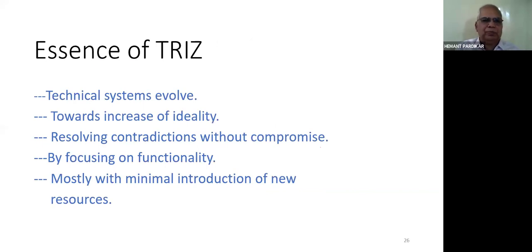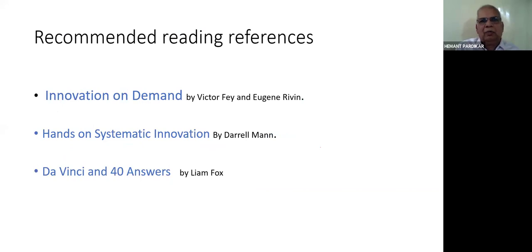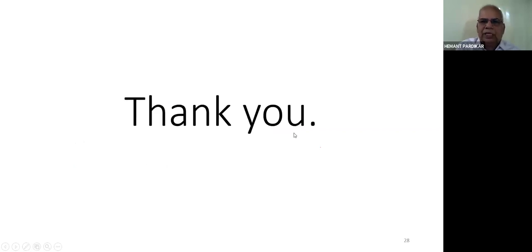This is my last slide. Technical systems essence of TRIZ: technical systems evolve towards increase of ideality, resolving contradictions without compromise by focusing on functionality, mostly with use of minimal introduction of new resources. These are some recommended reading references. This is a great book available on Amazon. This I can circulate, easily available, you can download freely from Google. This is a 500 page book, some kind of Bible for TRIZ people, especially who are using technical TRIZ in their work. Thank you very much, I am open for questions now.